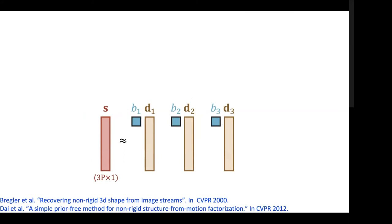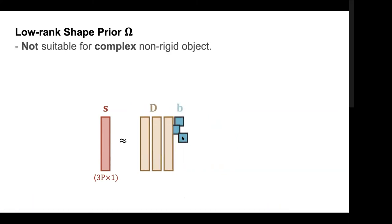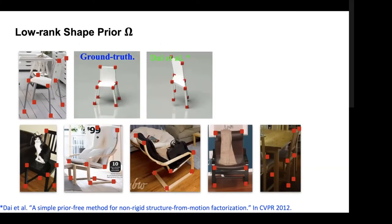A very simple idea is to assume the 3D shape for an object category lies in a low-dimensional linear subspace — we call this a low rank shape prior. The dictionary vectors are D1, D2, D3 and unknown coefficients are B1, B2, B3. This idea was made popular by Chris Bregler's famous paper at CVPR 2000, and follow-up work from Yuchao Dai's group at CVPR 2012 demonstrated how to use convex relaxations and trace norm to optimize and determine rank — I believe that paper won best paper at CVPR 2012.